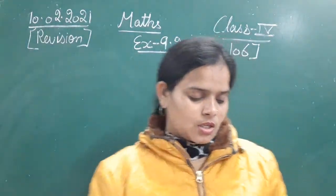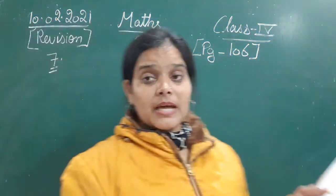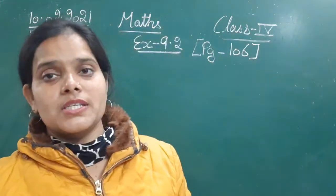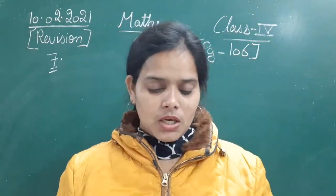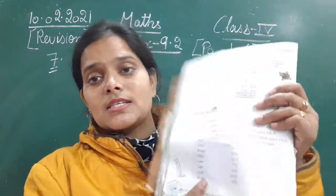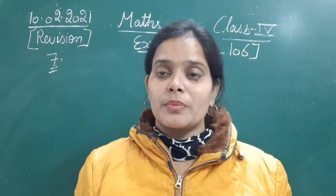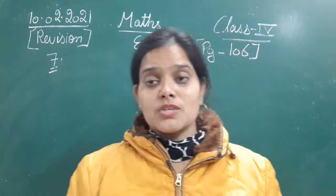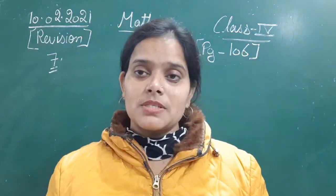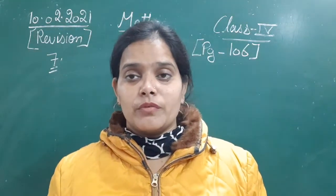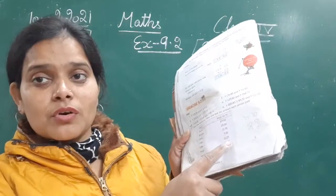So in this exercise we have done the sums of addition of money. Today we will start with the next few sums. Let's begin with sum number 7. In sum number 7, read the following menu and find the amount each person paid. So you can see here that this is a menu — suppose you went to a restaurant or hotel to have some lunch, brunch, or dinner. They give you a menu card to select your items, with the price of each item listed.